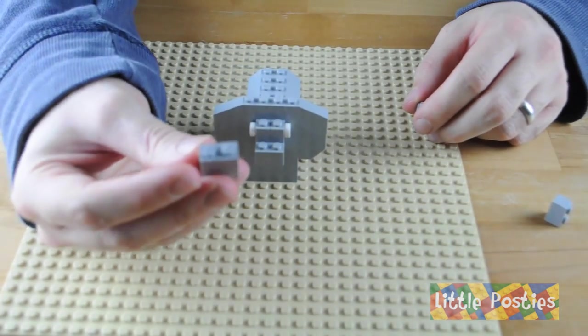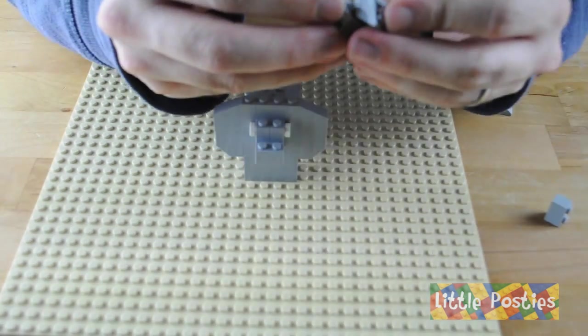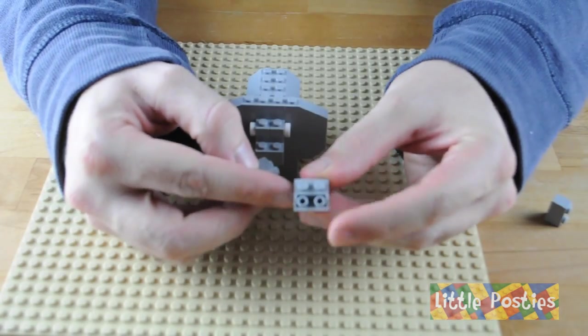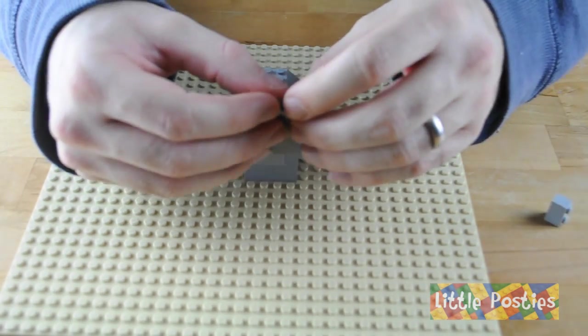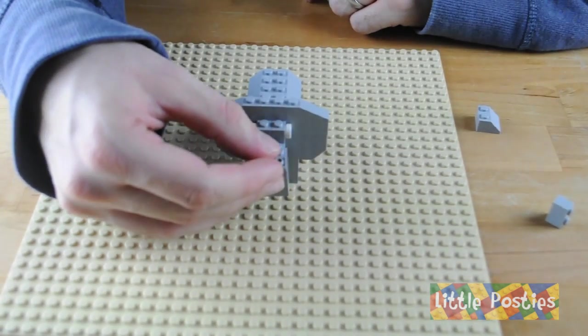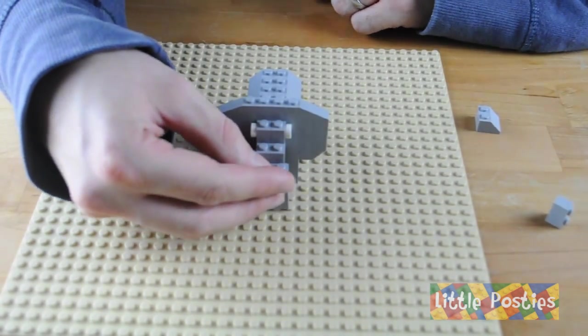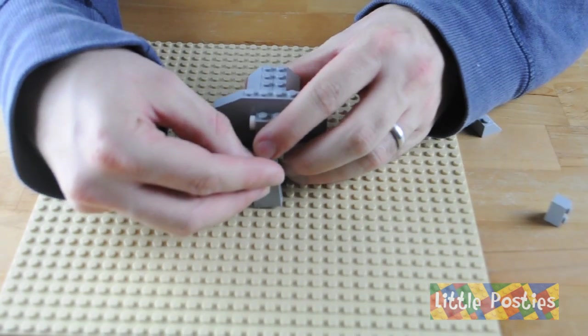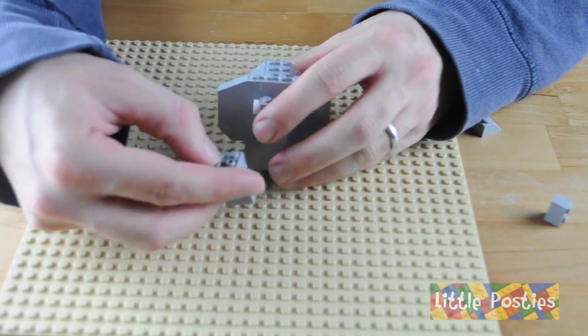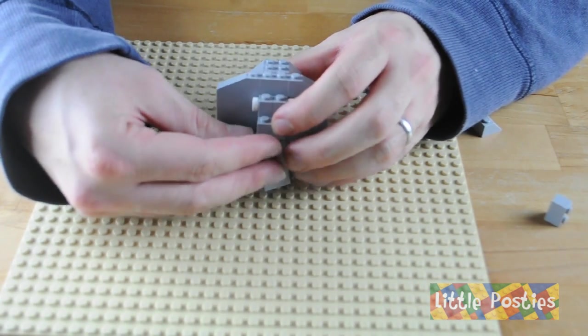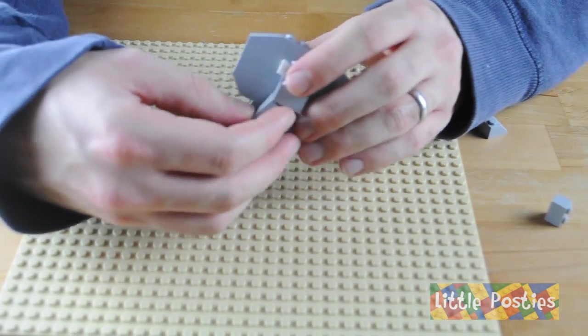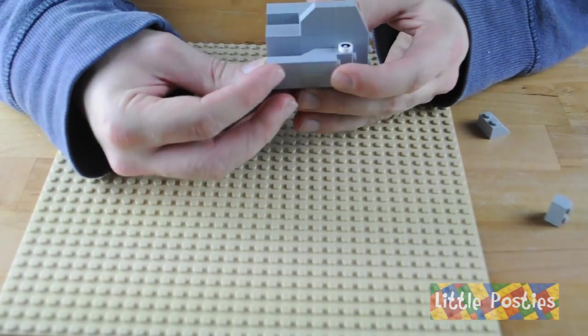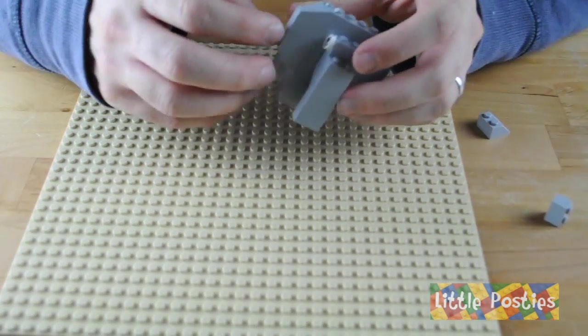Then grab this 2x2x1 and pop it on the 2x2 inverted slope. This is going to go underneath. So this way you need to have it away from the body. That way it gives you the trunk.